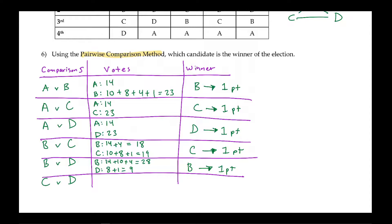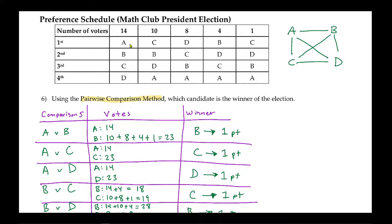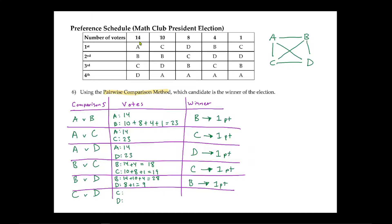The last matchup is Cora versus Dan. For the first pile, Cora is the winner — she gets 14 points. For the second pile, Cora beats out Dan — Cora gets 10 points. Similar to before, Cora has already obtained more than the majority, so we know she wins. Continuing: in the third pile, Dan beats out Cora — Dan gets 8 points. In the fourth pile, Dan beats out Cora — Dan gets 4 points. In the last pile, Cora beats out Dan — Cora gets 1 point. Totals: Cora gets 25 points and Dan gets 12 points.